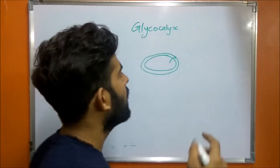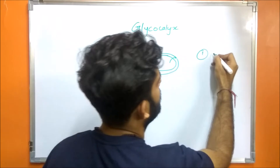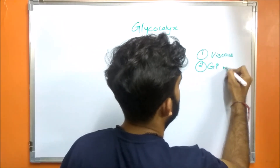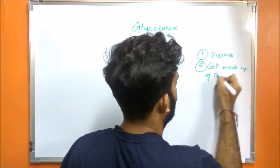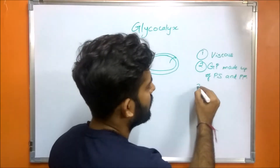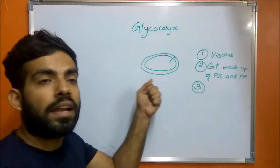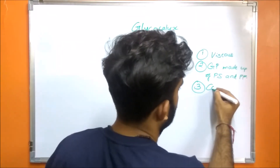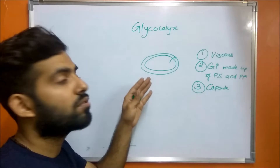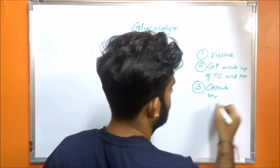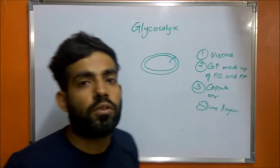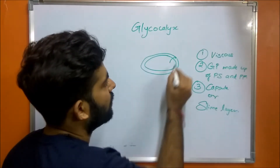Glycocalyx is made up of polysaccharide and polypeptide. Its first property is that it is viscous, and its second property is that it is a gelatinous polymer made up of polysaccharide and polypeptide. Third, if the glycocalyx is firmly attached to the cell wall, it is known as a capsule. When it is not firmly attached, it is known as a slime layer.